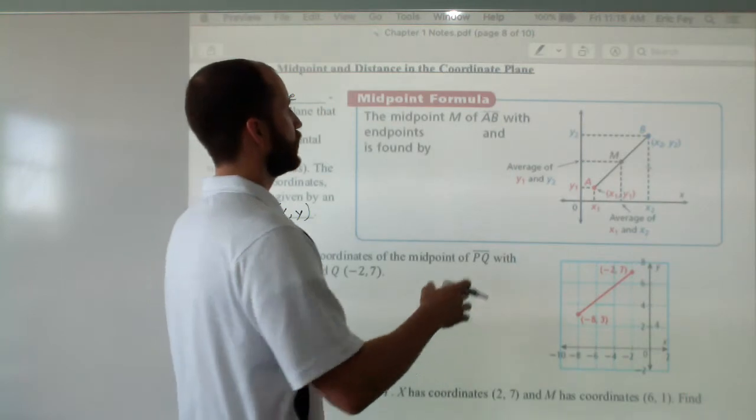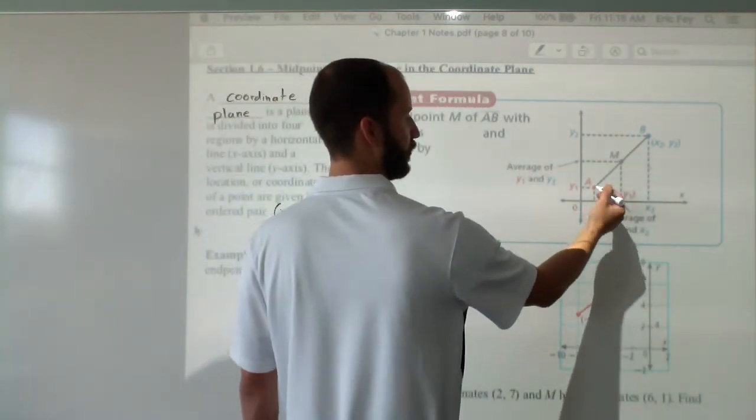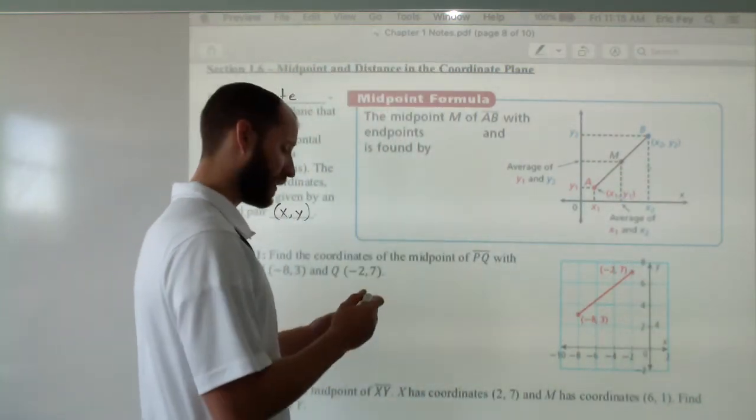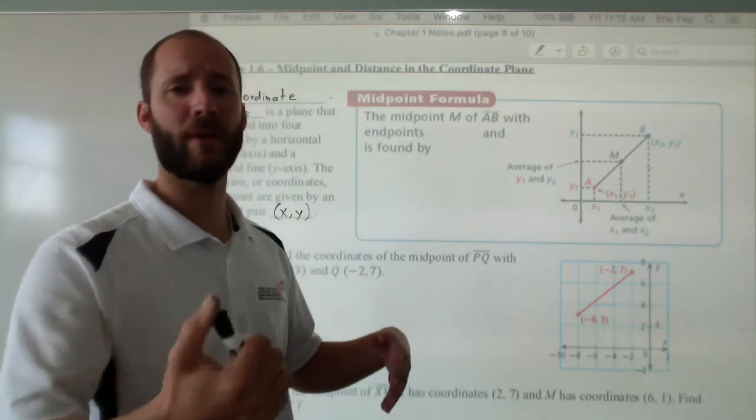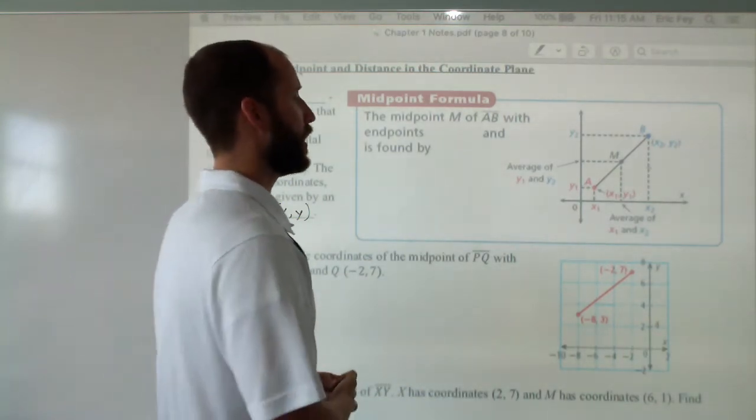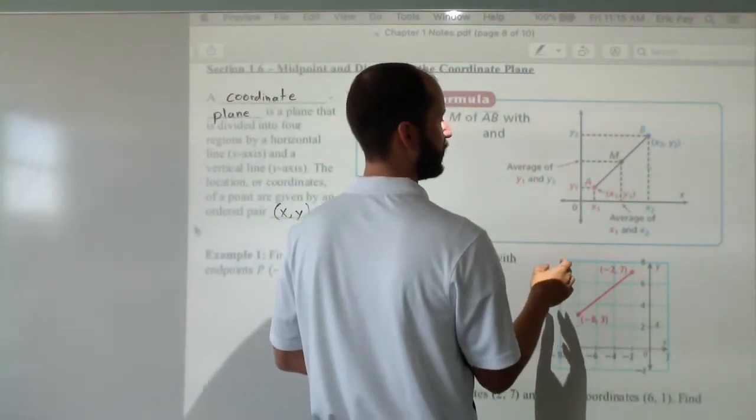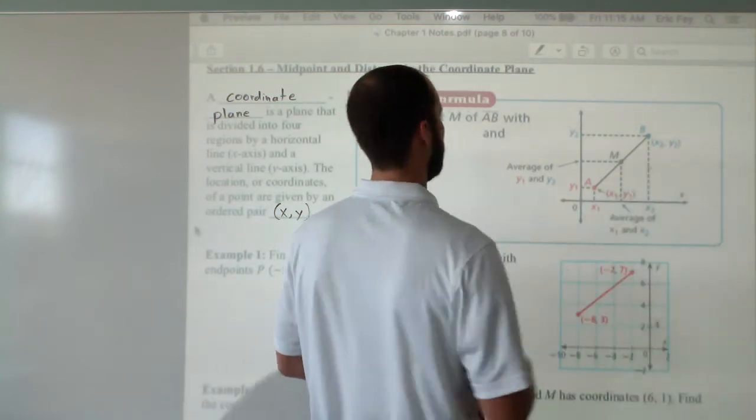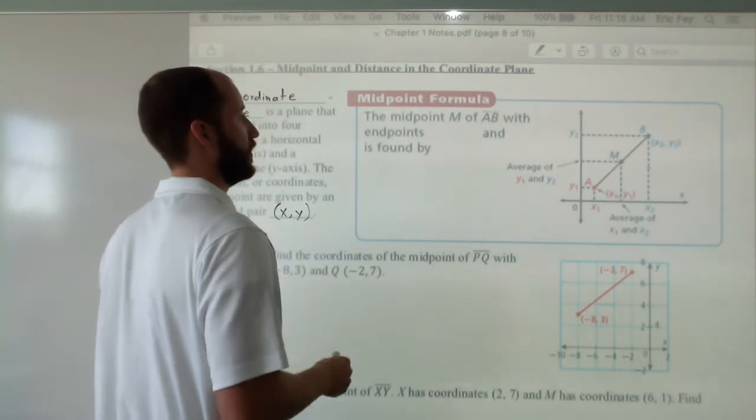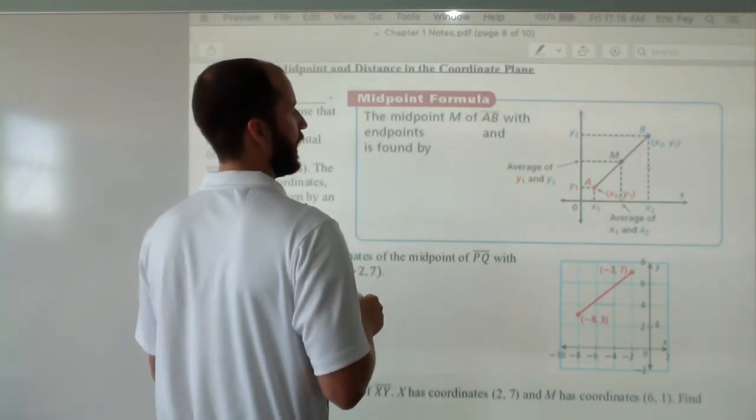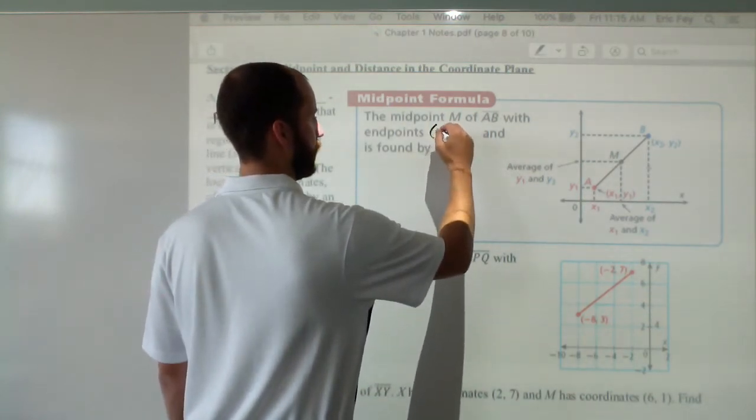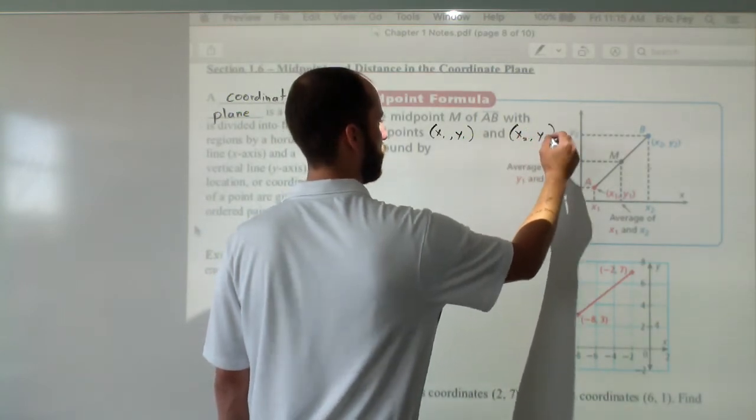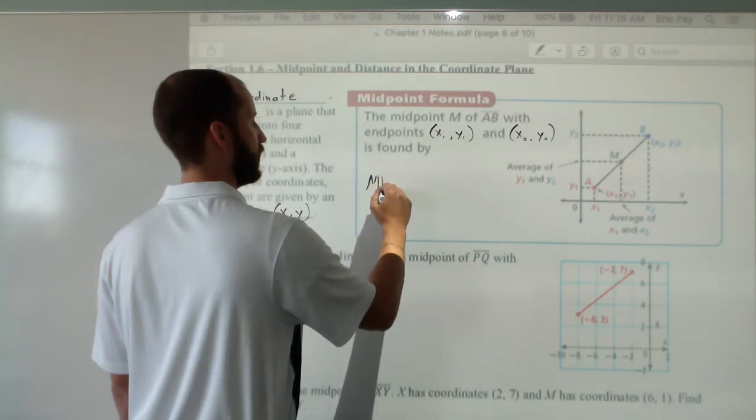So looking at the midpoint formula, you have a line segment from A to B. M is going to be in the middle. That's your midpoint. Now because we have two separate coordinates, point A and point B, that have both x and y ordered pairs, we have to distinguish them from each other. So A is our first point. We'll call that x1 and y1. B is our second point. Call that x2 and y2. So the midpoint M of line segment AB with endpoints x1, y1 and also x2, y2 is found by this formula.